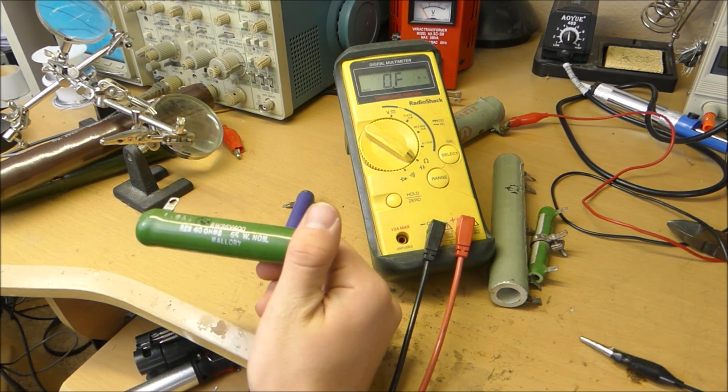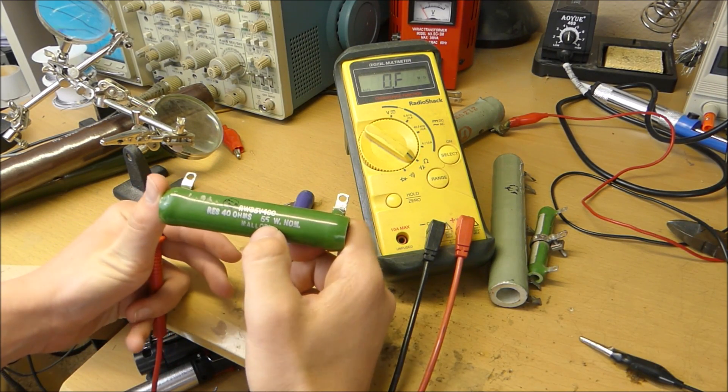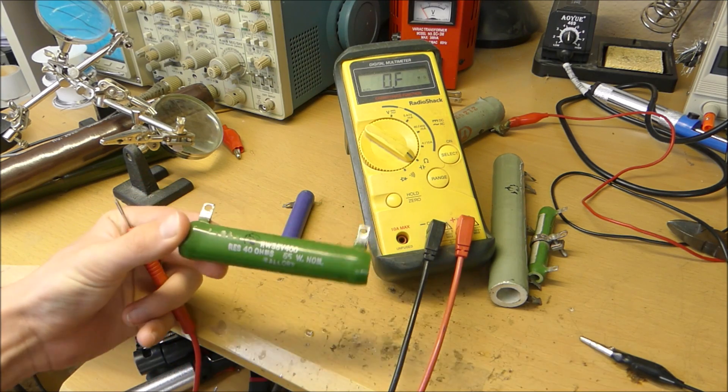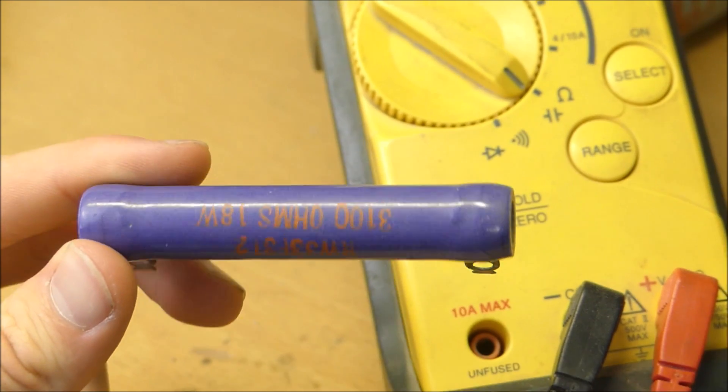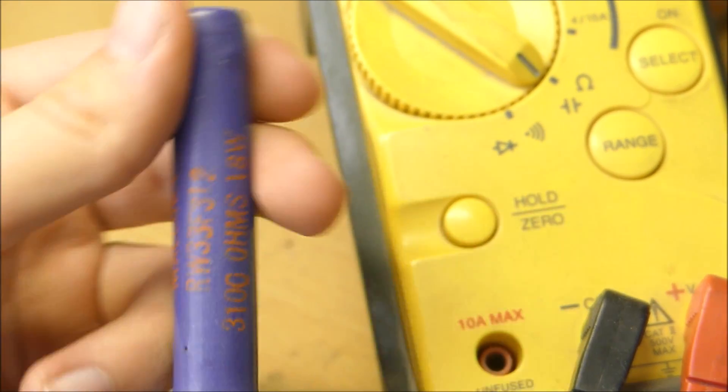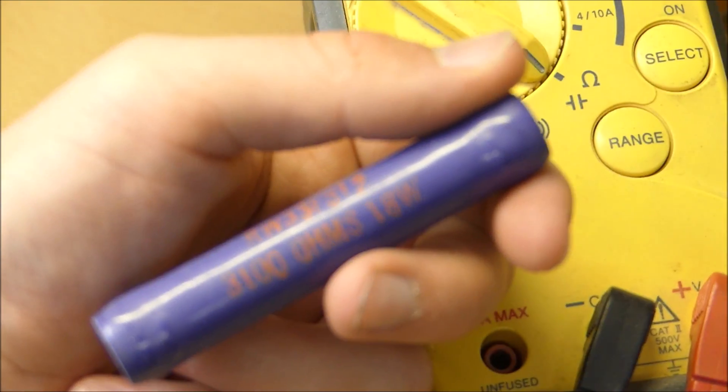This resistor is 40 ohms and it's 55 watts. This tiny resistor being 55 watts, that's crazy. As you can see, this resistor right here is 3k ohms at 18 watts. So that should be pretty useful.